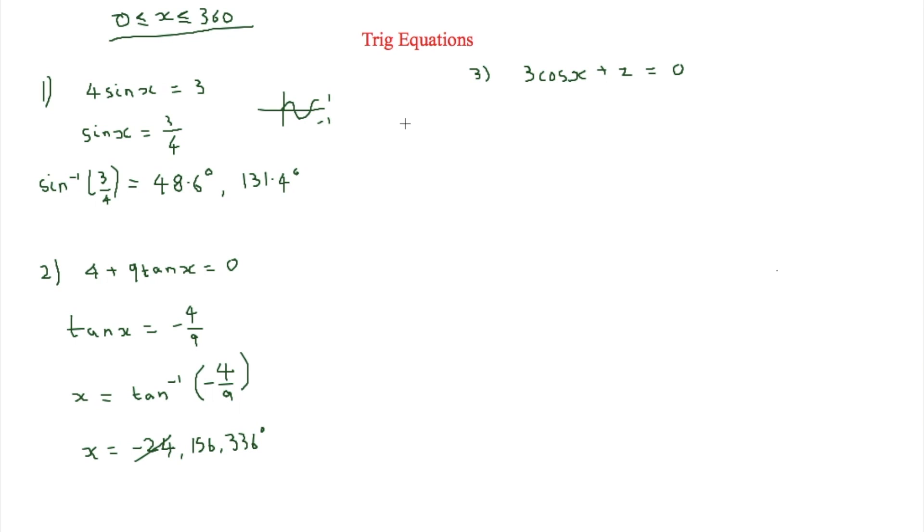So the final one is using cos. And again, on this one, we'll do cosx is equal to minus two thirds. Now therefore, we'll be using cos minus 1 of minus two thirds.